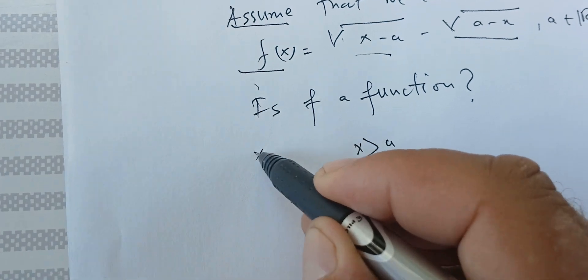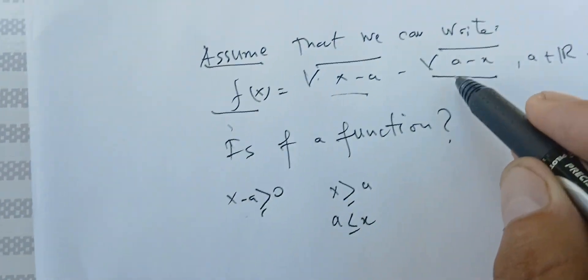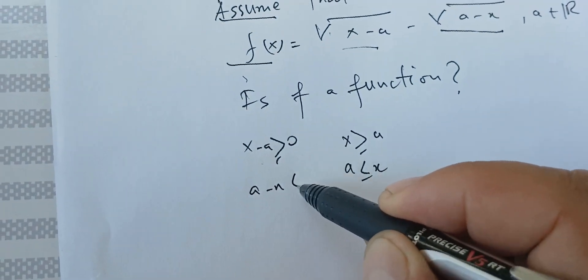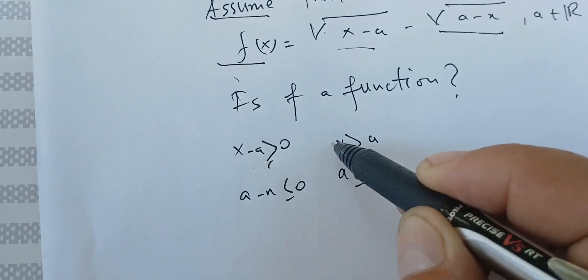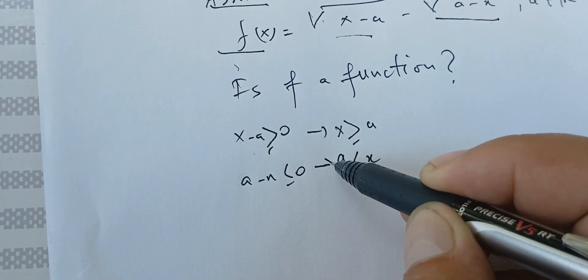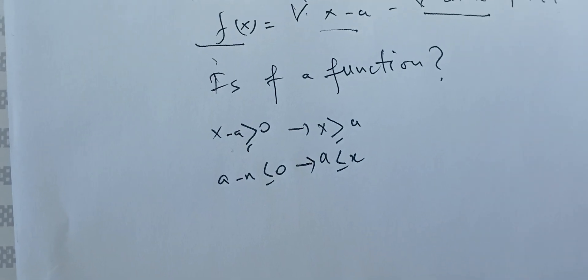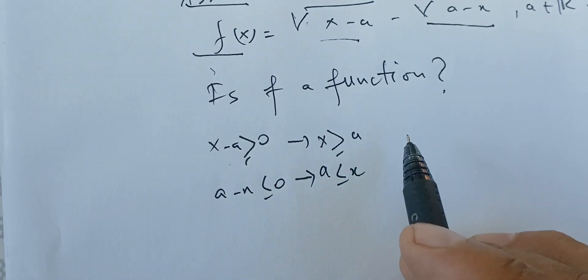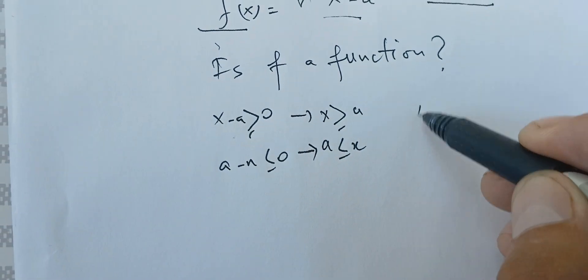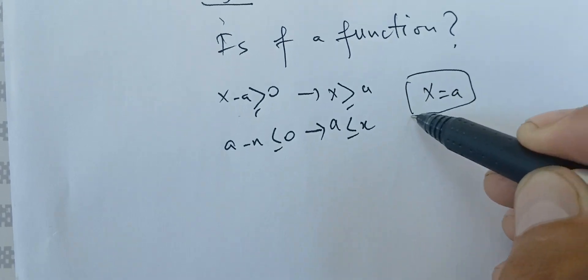So this condition is x minus a bigger than 0, and this one here is a minus x less than 0. This one gives me this condition, and this one gives me this one here. And if I see here, with these two conditions, I get x equals a.